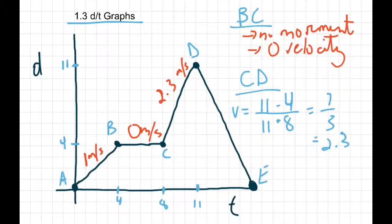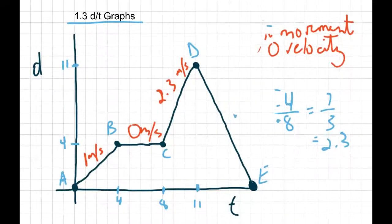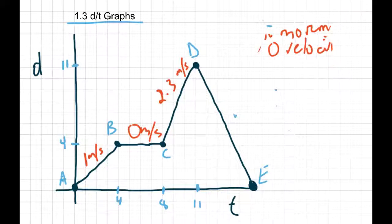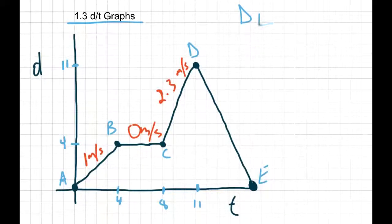Now if we calculate through the same thing for D to E, we should see that we should have a number again, right? It's still sloped, so we should have some sort of speed, but it's sloped downwards. So what happens when we do the calculation? If we just do the exact same calculation we did before, but use our new numbers, so we're going from 11, 12, 13, 14, 15, we're going up to 16 seconds.